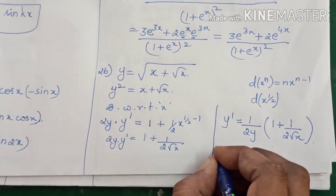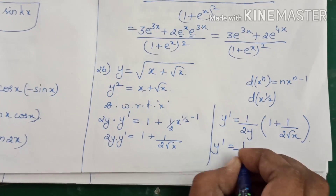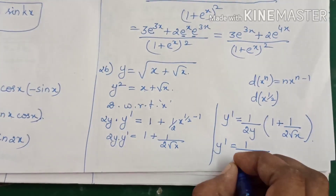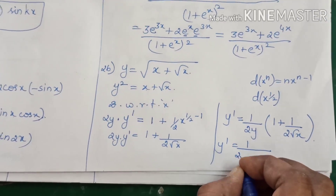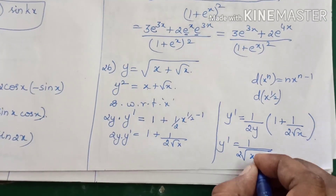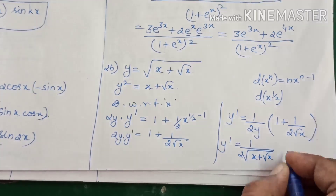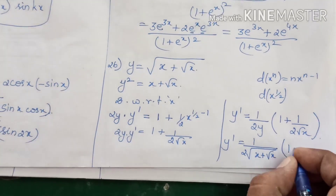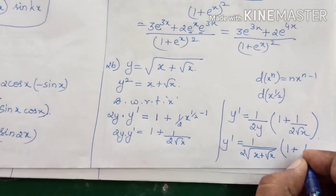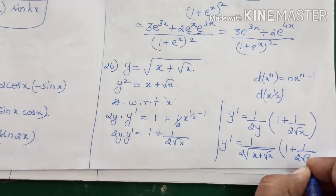Now substituting y back in: y dash equals 1 divided by [2 · √(x + √x)], into (1 + 1/(2√x)). That is our final y dash for the 26th sum.